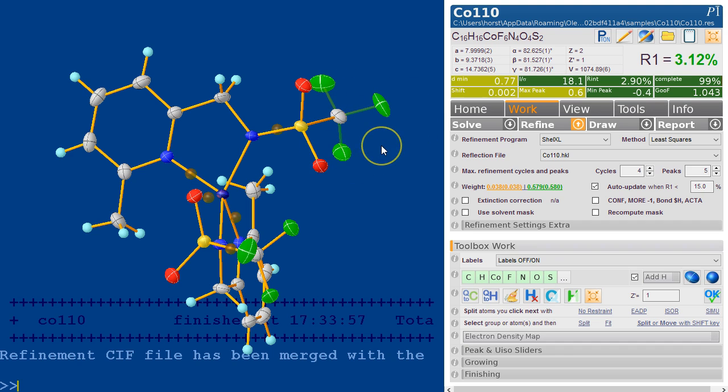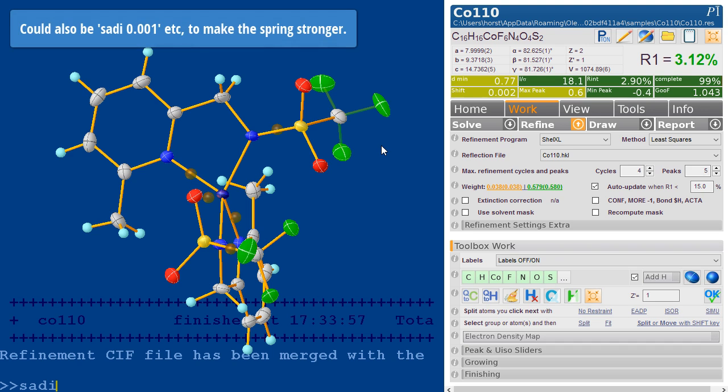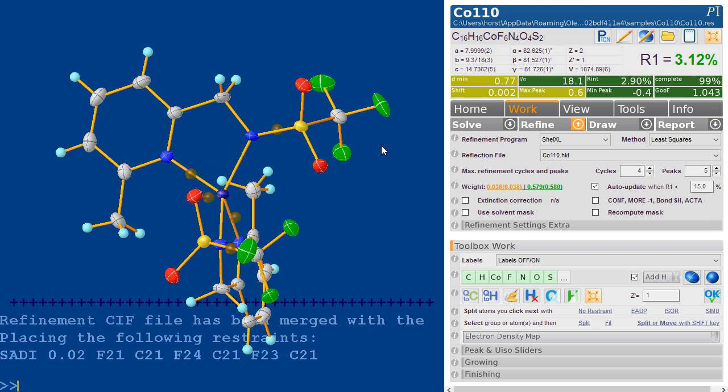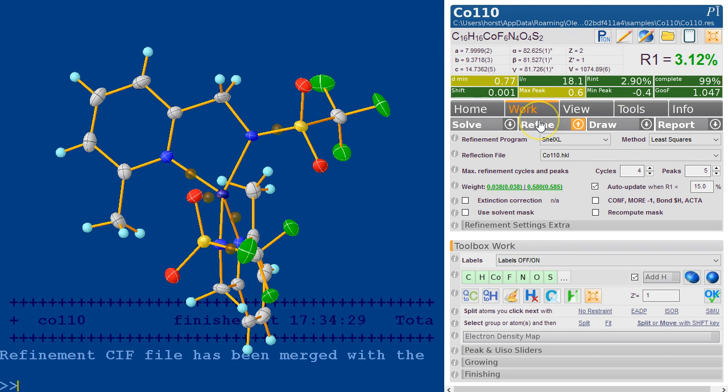you just select the three distances and type SADI, which is the familiar restraint for this particular restraint you want to put on here. This puts the SADI into the INS file. Once you press refine it puts it in. So again, there's no need to actually edit the INS file at all. It's all taken care of.